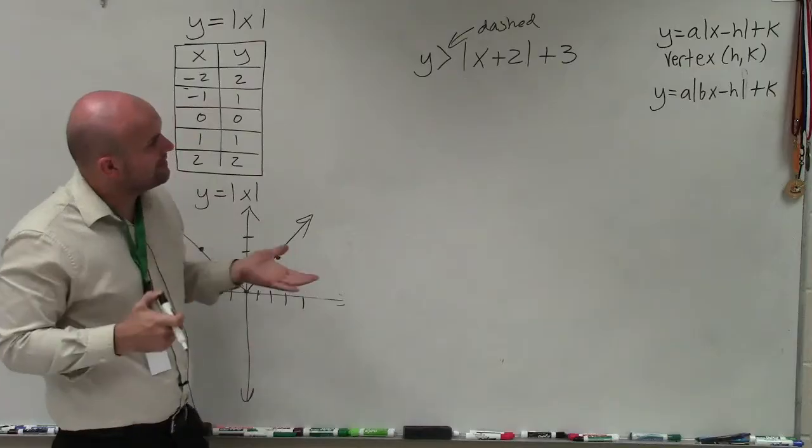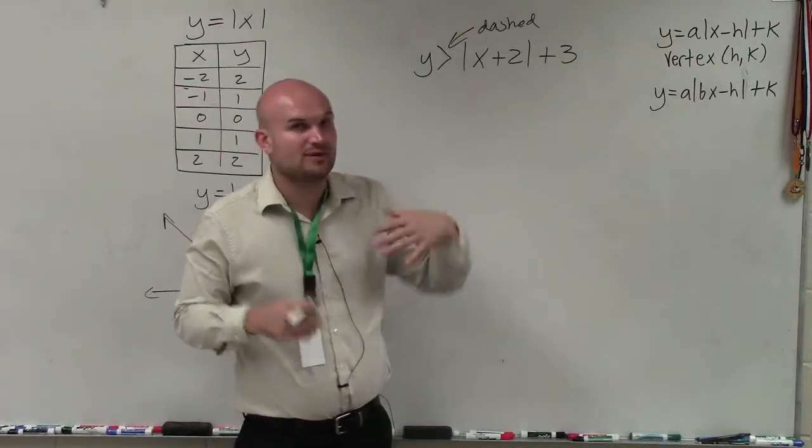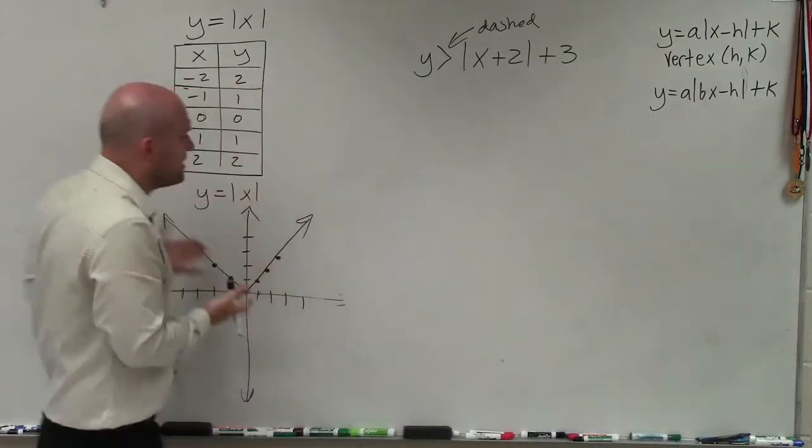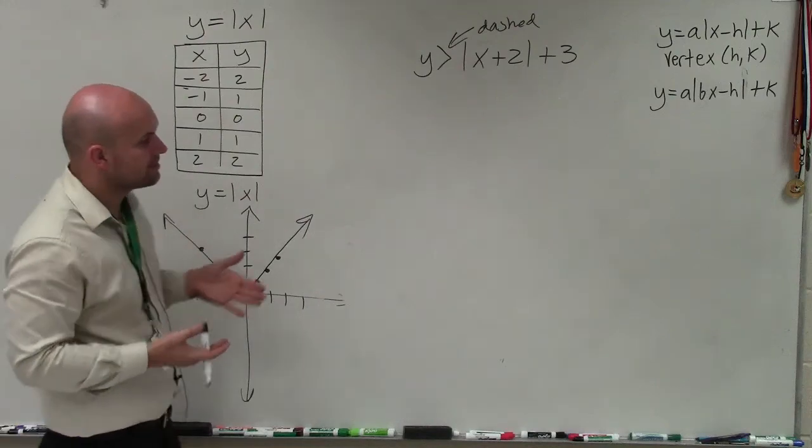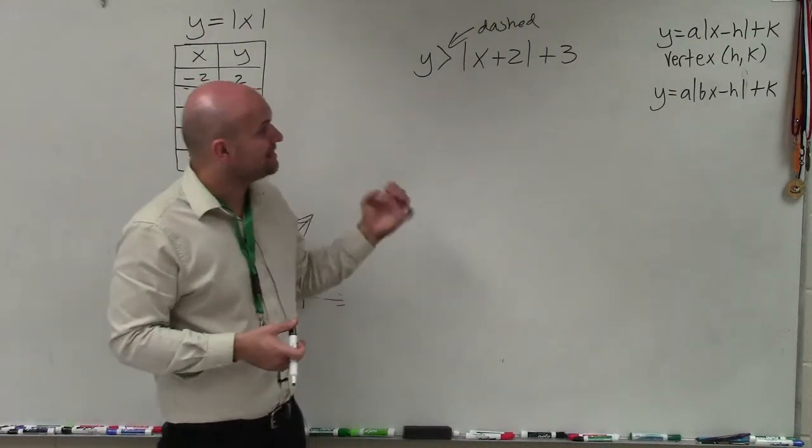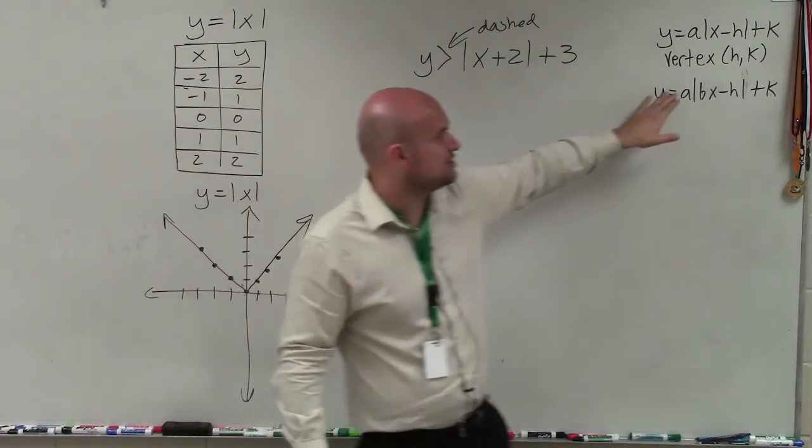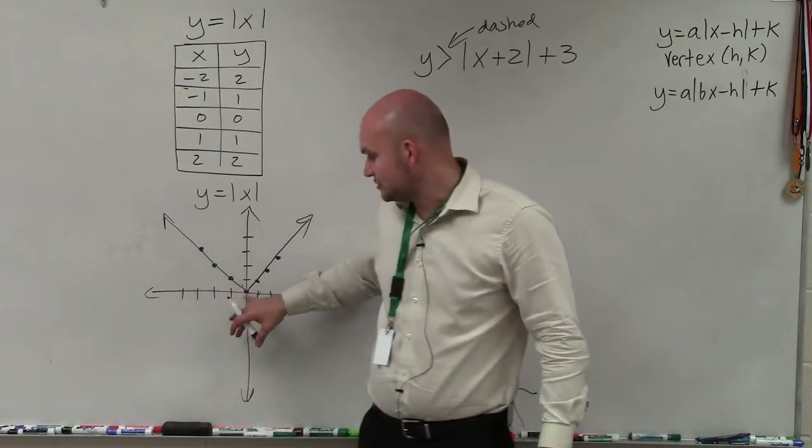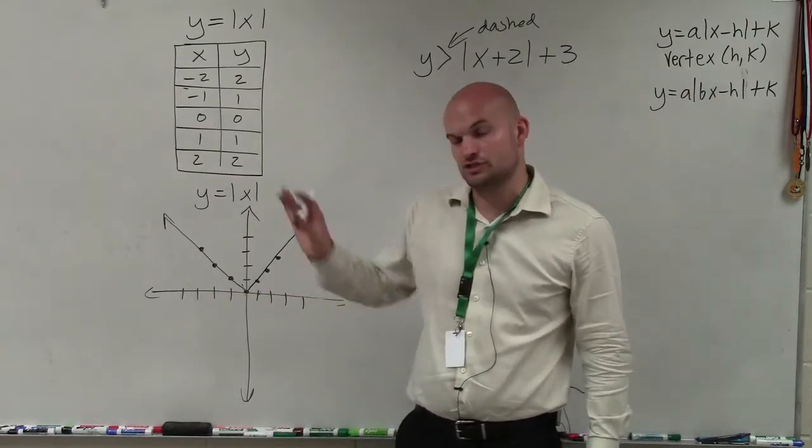Now what we need to do is identify what is my 2 and 3, and how is that going to affect my parent graph for the absolute value. The 2 and the 3 will change my new vertex. Notice the vertex here is at (0, 0). That's where the graph changes direction.